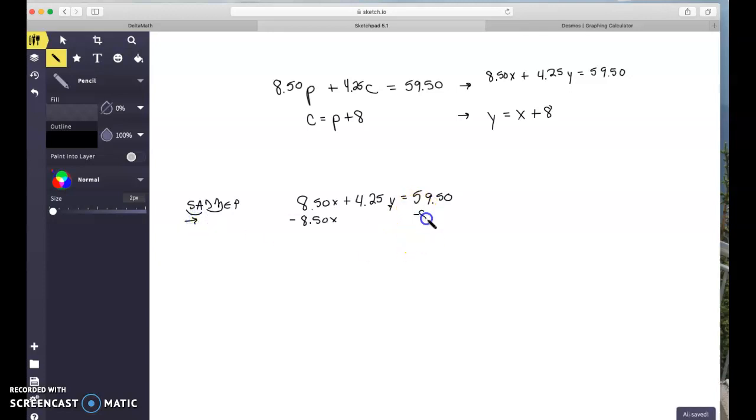I'm going to subtract 850 X from both sides of my equal sign. I'm left with 425 Y equals negative 850 X plus 59 50. And I'm going to divide both sides of my equal sign by my 425.